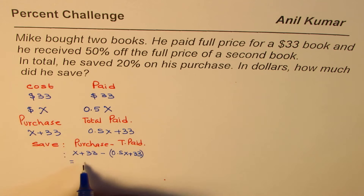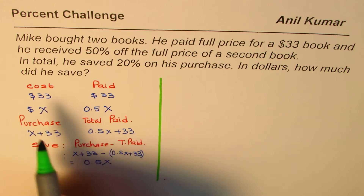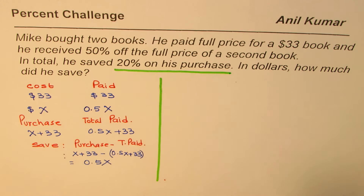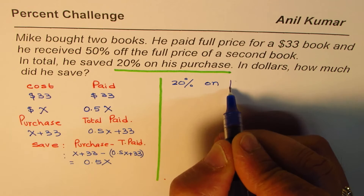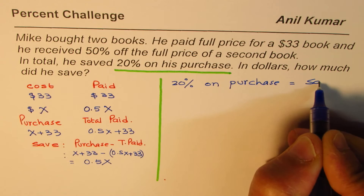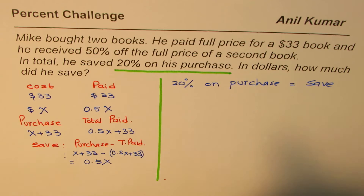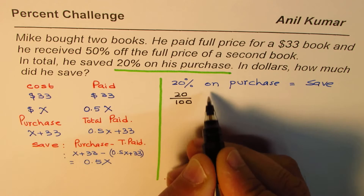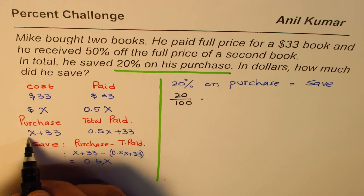Now let's read the next statement: in total he saved 20% on his purchase. That means 20% on purchase equals what he saved. We write 20% as 20 over 100, which is 0.2, multiplied by total purchase.